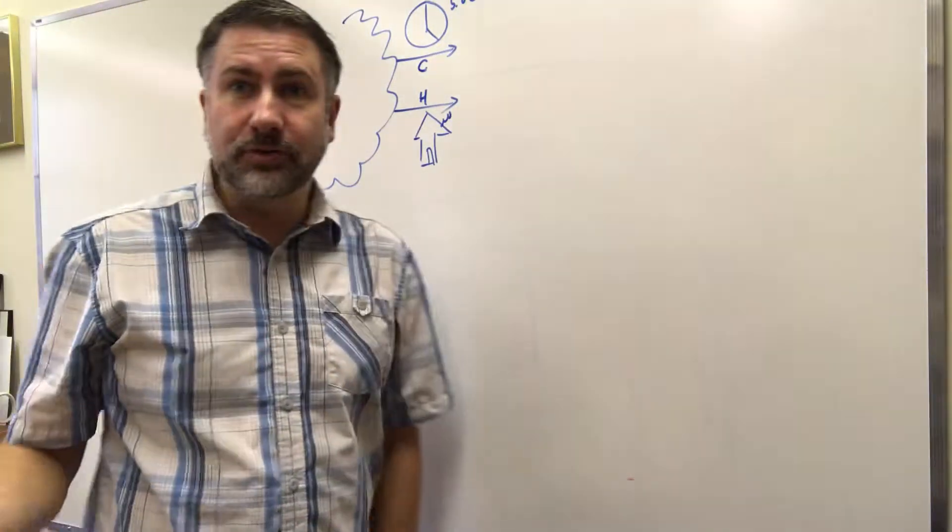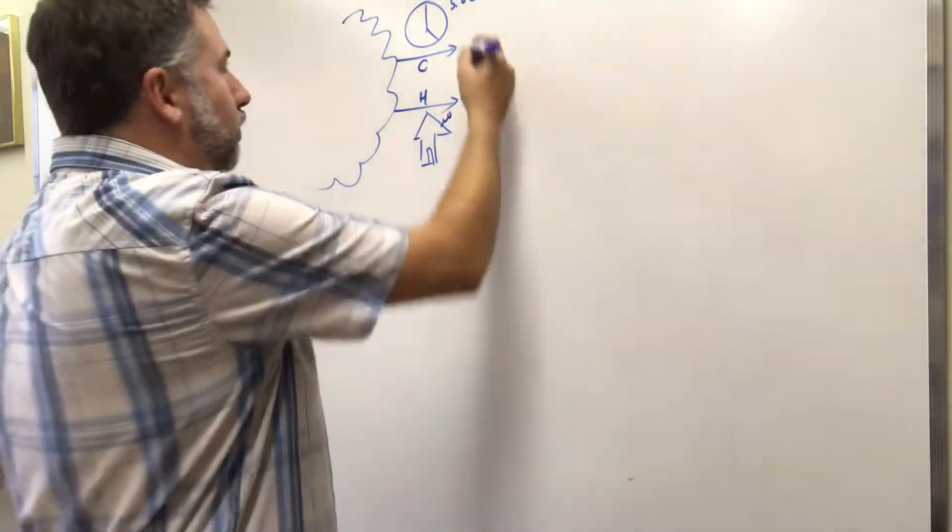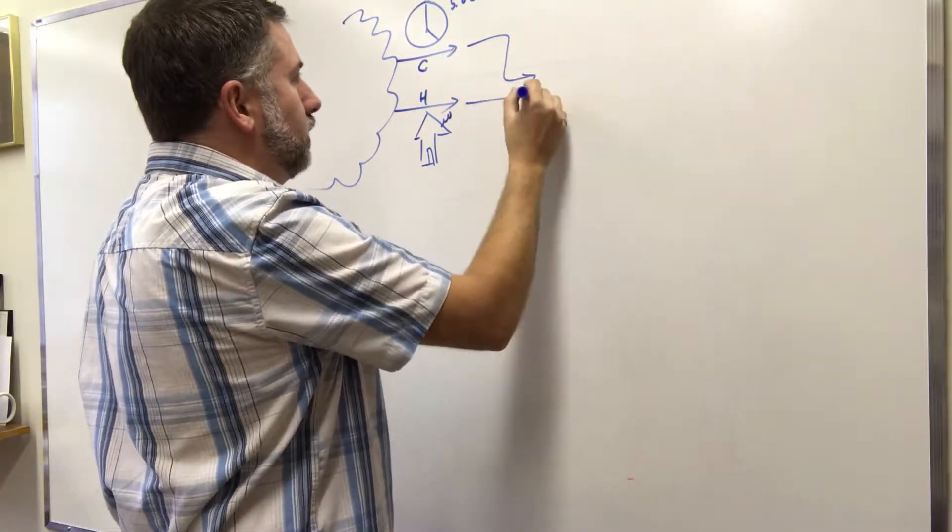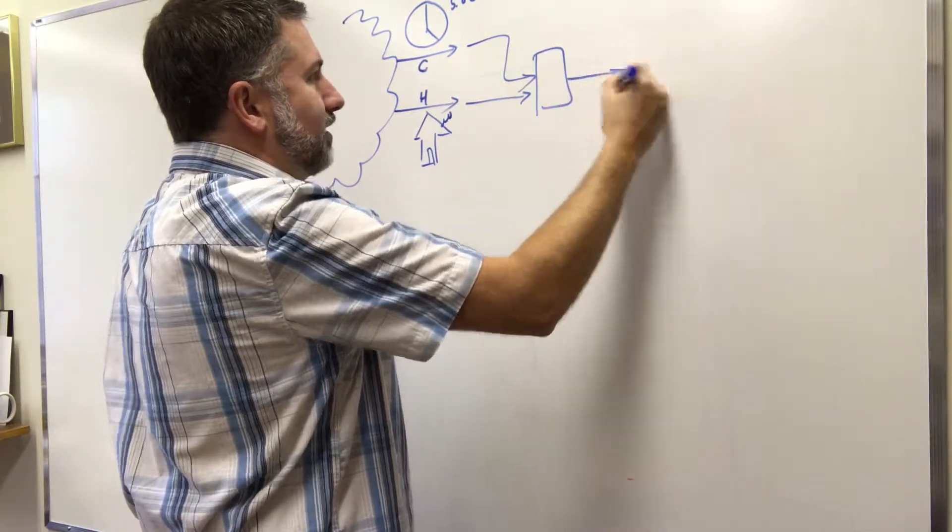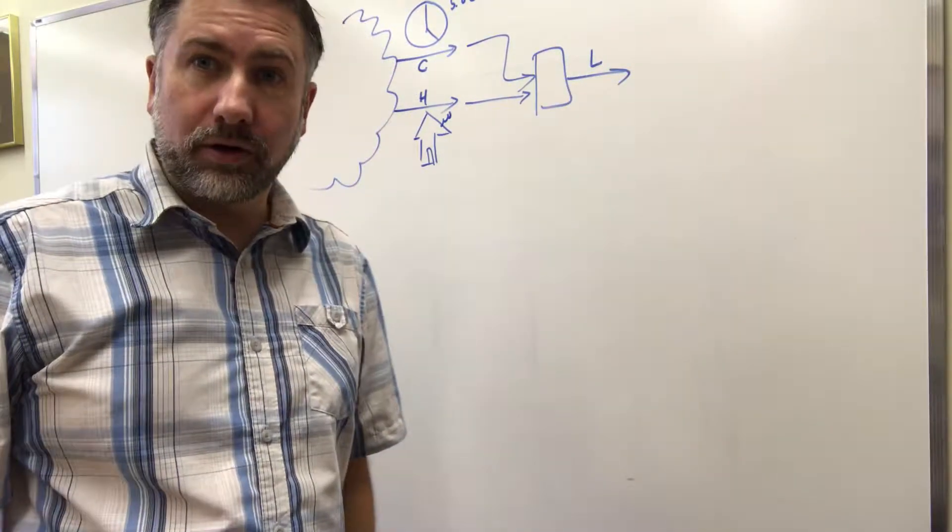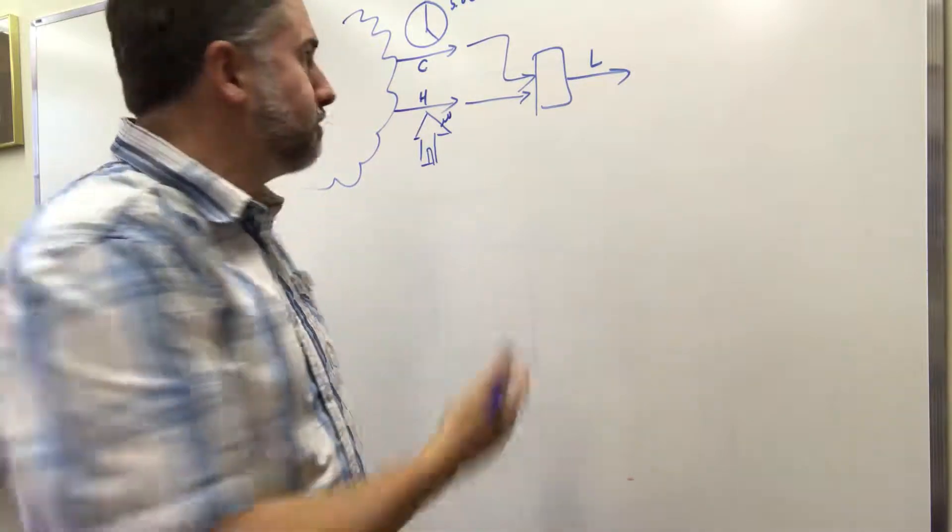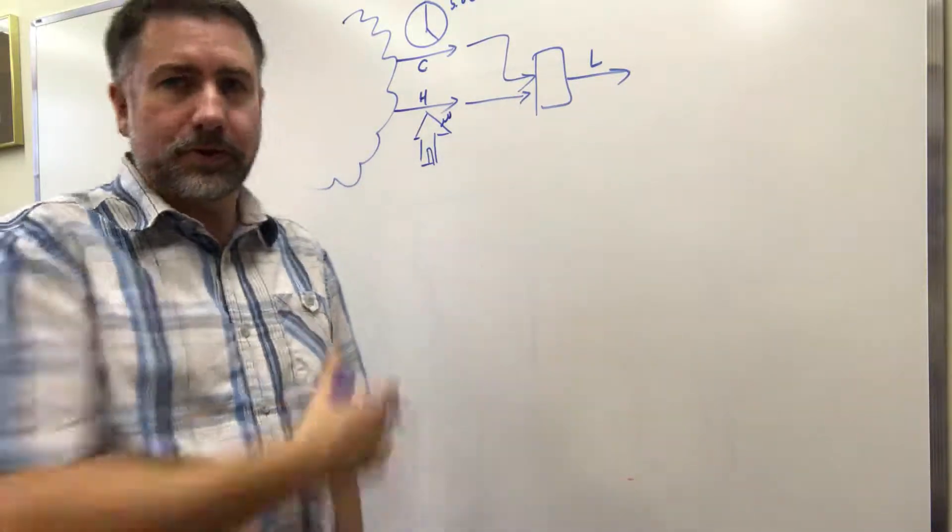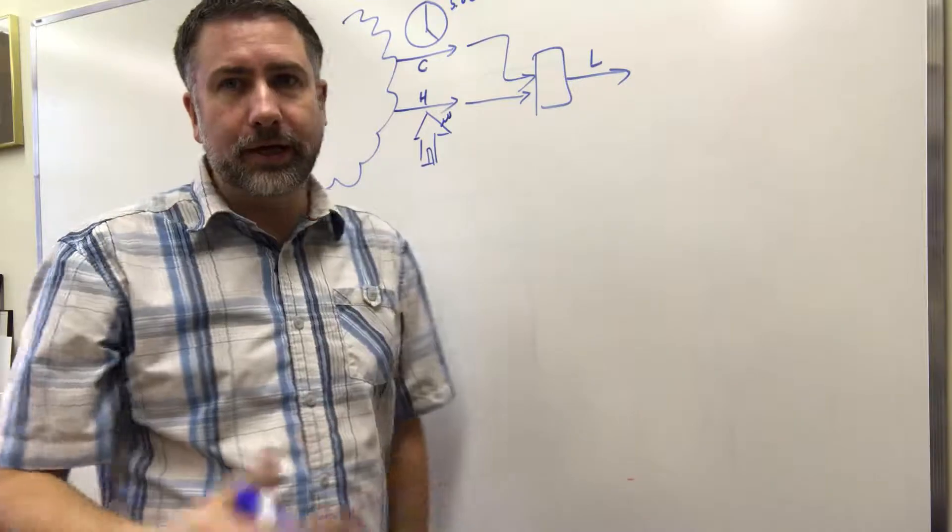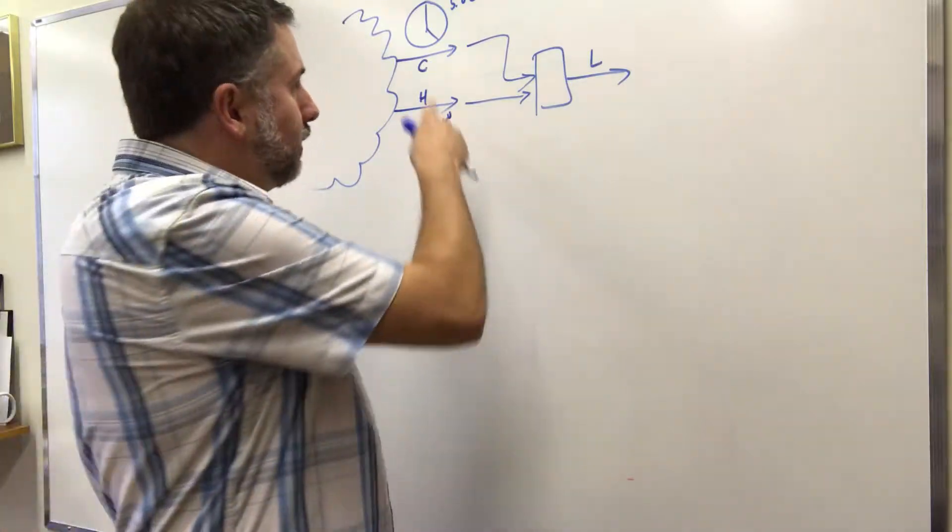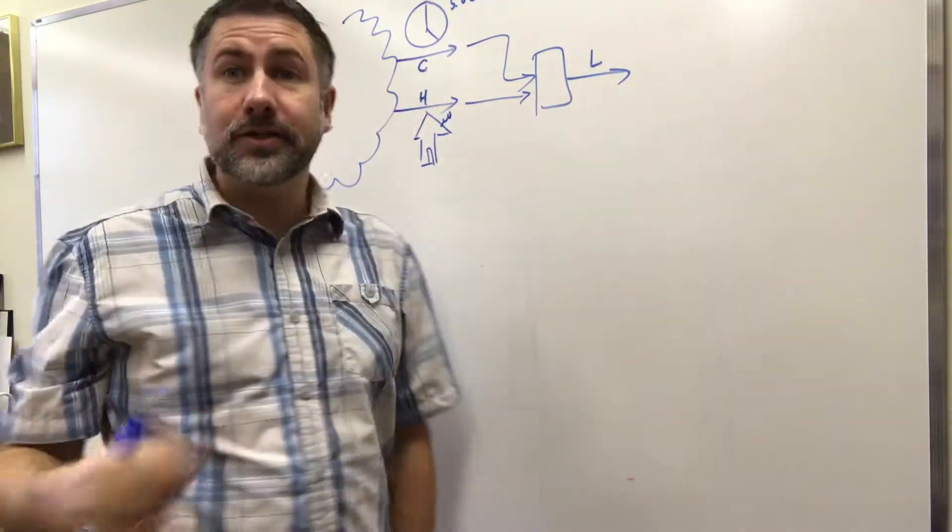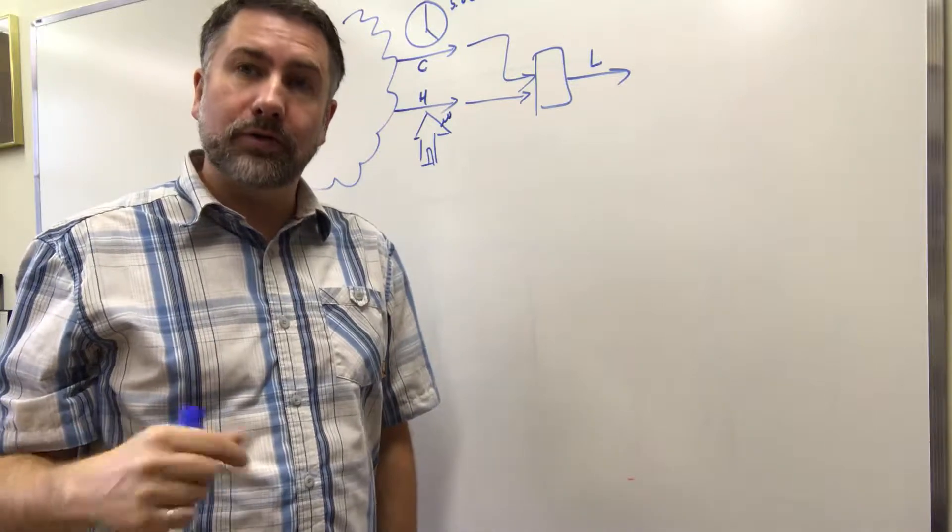This information comes from the outside world somewhere but what we can do is we can put it into a box that then tells us whether the light is on or off. Now this box can be a computer or it can be an electrical relay or who knows what. But it's going to take information from these two sources and make a decision on whether or not the light should be on or off.